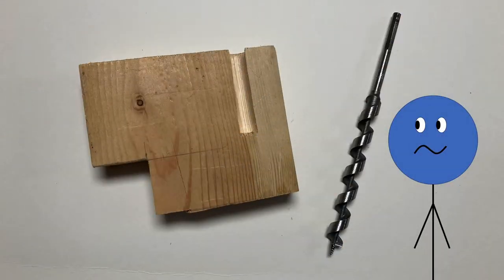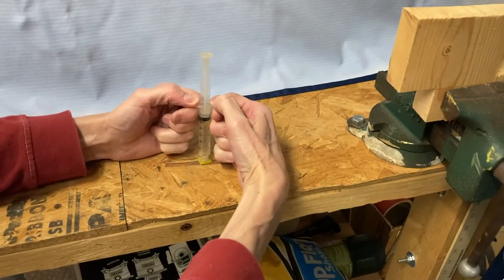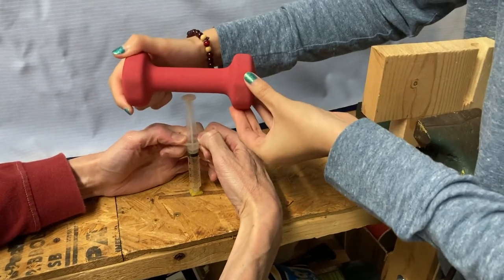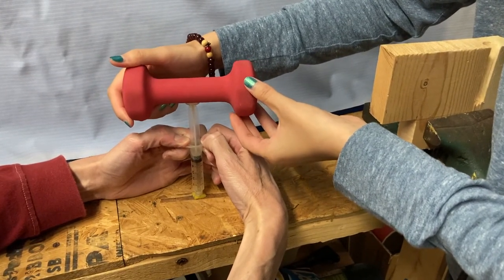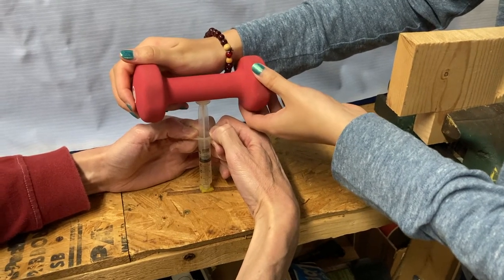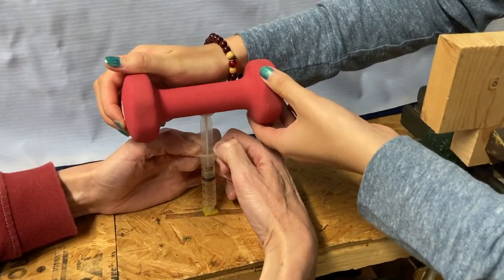If you can't make a holder for your syringe, you can still do the experiment. Just have a partner hold the syringe down, pressing the tip into a small piece of rubber, and have someone else place the weights on top. Still make sure to record the weight and the volume in the syringe like before.